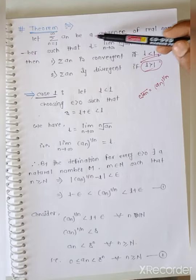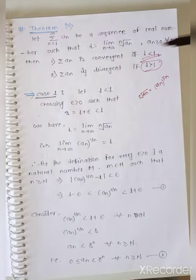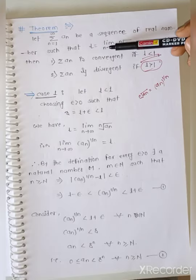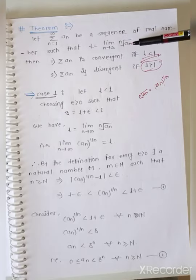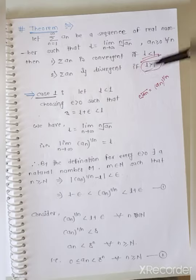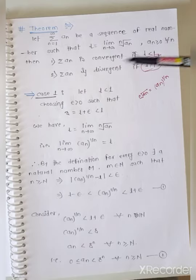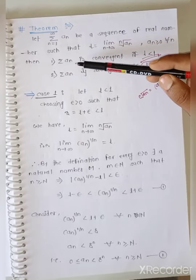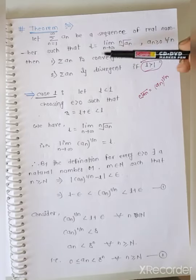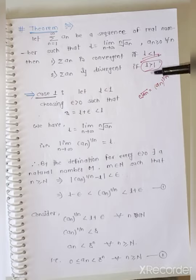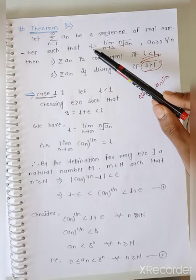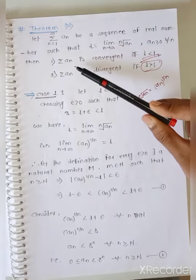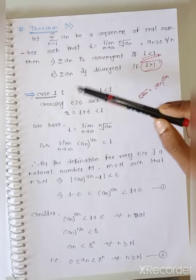Cauchy's Root Test definition: Let the summation n equals 1 to infinity of a_n be a sequence of real numbers such that L equals the limit as n tends to infinity of the nth root of a_n, where a_n is greater than or equal to 0 for all n. First condition: the summation a_n is convergent if L is less than 1.